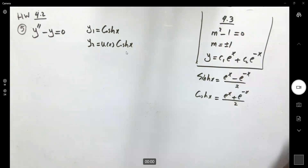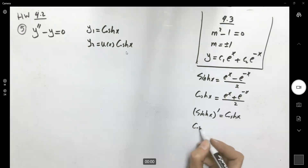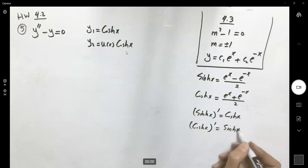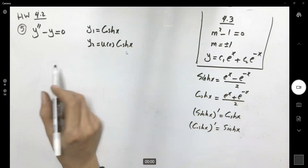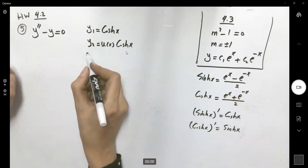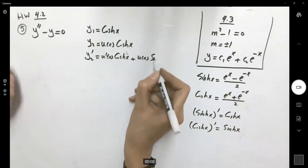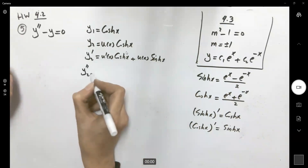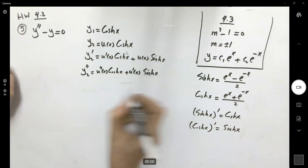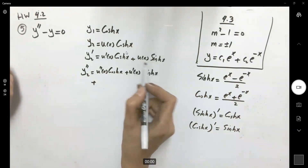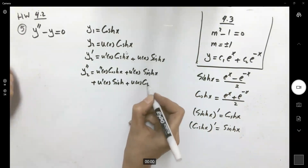For the derivatives of hyperbolic functions: the derivative of sinh(x) is cosh(x), and the derivative of cosh(x) is sinh(x). Using reduction of order, we need the second derivative of the trial solution. The first derivative is u′ cosh(x) plus u sinh(x), and taking the derivative again using the product rule gives u″ cosh(x) plus u′ sinh(x) plus u′ sinh(x) plus u cosh(x).